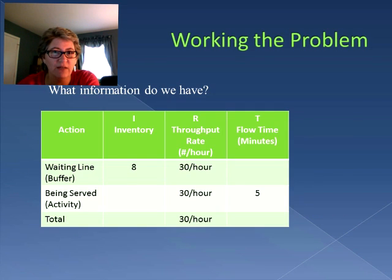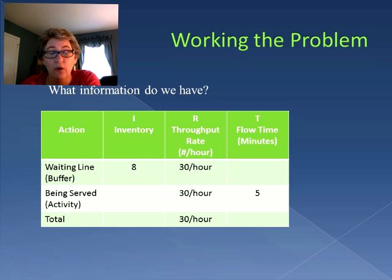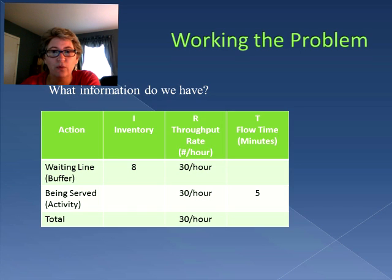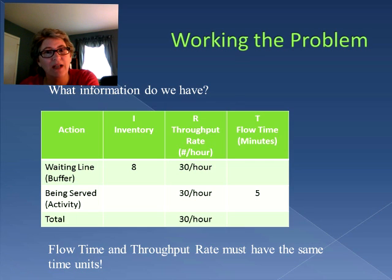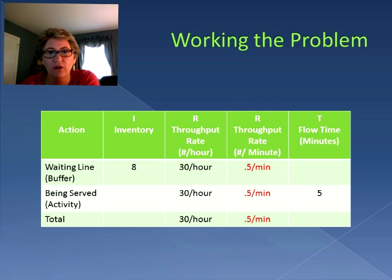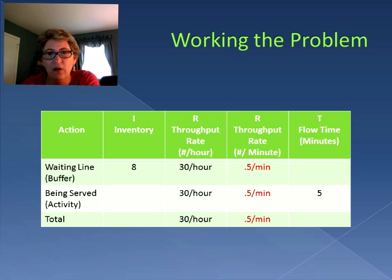Our first step is to look at what information we have. From the problem, we were given that there are eight people in the waiting line and the throughput rate is 30 people per hour. At the deli counter activity, it takes five minutes on average. But we have a problem — the throughput rate is in units per hour, but our flow time is in minutes. We have to make sure our flow time and throughput rate have the same time units, otherwise our equation will not work. So we're going to add another column and convert the throughput rate to units per minute: 30 per hour is equivalent to 0.5 people per minute. Now all our units match — people and time in minutes.